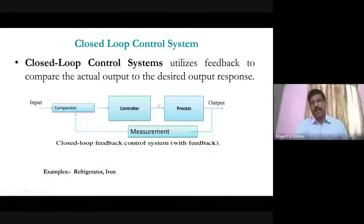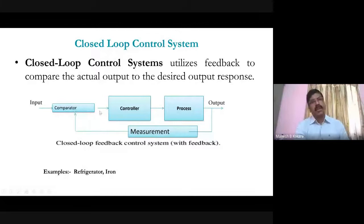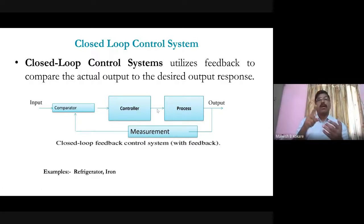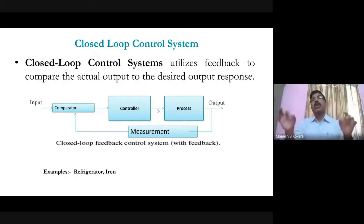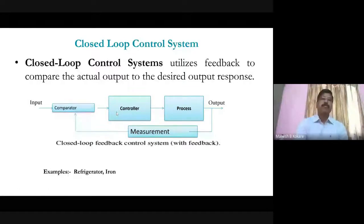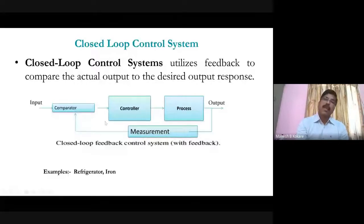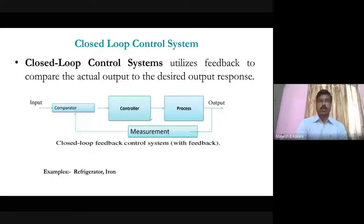In a closed-loop control system, even if the output changes due to noise or internal or external disturbances, this change is fed back to the input comparator, the error is updated, and the controller takes corrective action. Regarding calibration: even if the equipment is not properly calibrated, the output will be measured and corrective action will be taken. So calibration does not play a major role in a closed-loop control system.